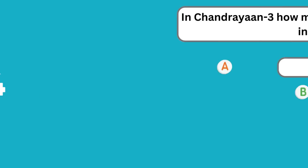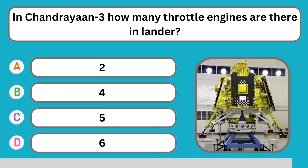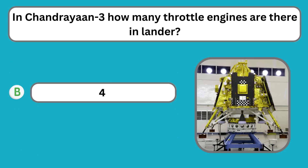In Chandrayaan-3, how many throttle engines are there in the lander? 4.